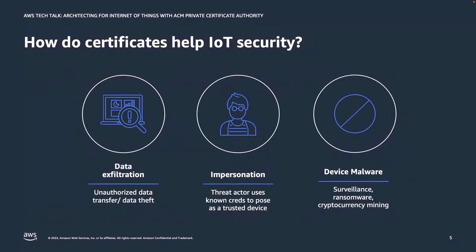There are several threat vectors that certificates can help mitigate. First, data exfiltration: if your device operates over unencrypted networks, someone could sit on your communication channel and collect transmitted data. Now that we have wearables and smartwatches collecting personal and health data, we don't want that falling into the wrong hands. Next is impersonation — a malicious actor could pose as a trusted device using stolen credentials, leading to problems from transmitting false data to unauthorized access to internal networks. Having a system for certificate revocation and renewal is an effective strategy against this.